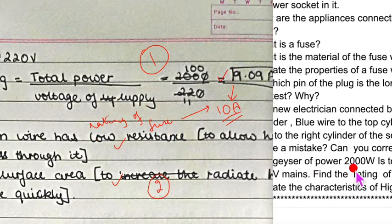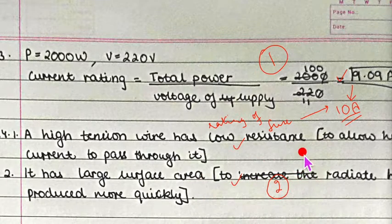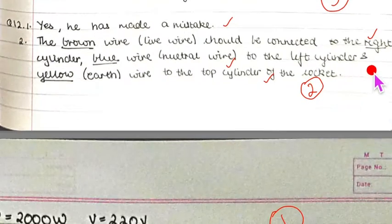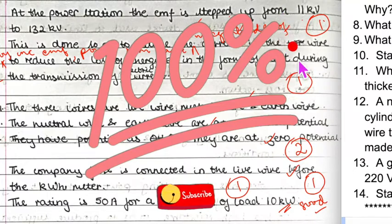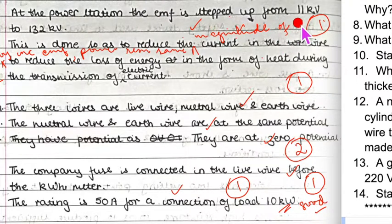Question fourteen: State the characteristics of high tension wire. High tension wire has low resistance and large surface area — a two mark question. Note that high tension wire is not in the reduced syllabus but was included in this test. This is how we present our work to get full marks. I hope you have understood what it takes and which facts are important from your ICSE examination point of view. Stay safe, stay healthy. Bye.